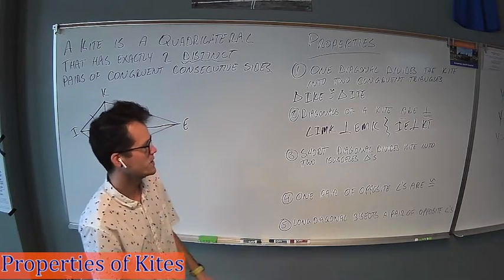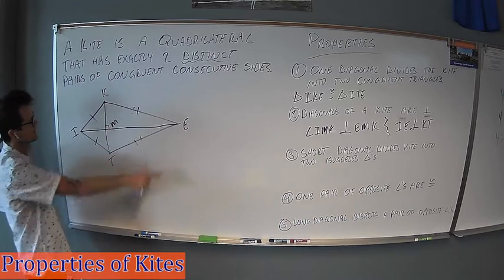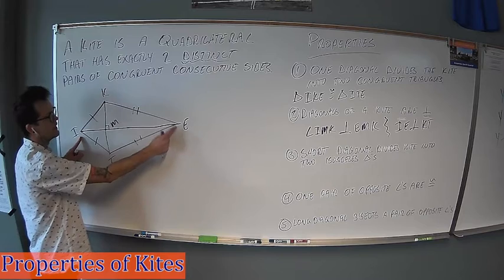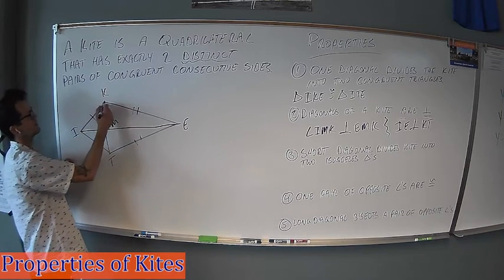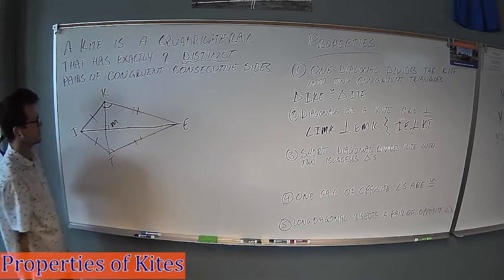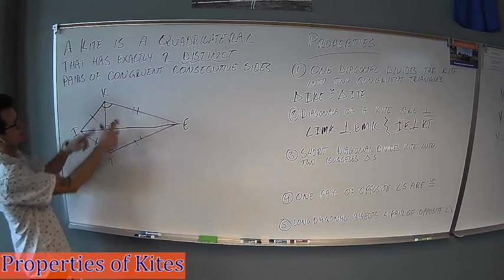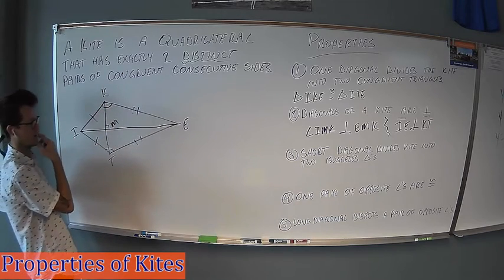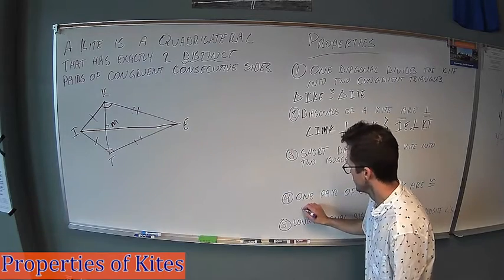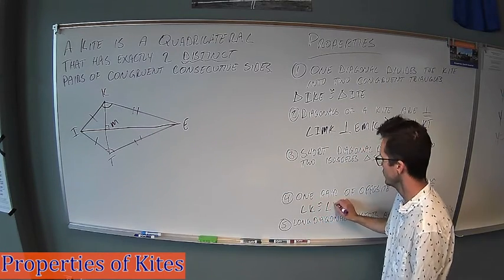Fourth out of five, one pair of opposite angles are congruent. So looking at this, kites, opposite angles, you have angle I and angle E. Those are not congruent, but these opposite angles, in this case, angle K and angle T are going to be congruent. And so it's where the short side and long side meet and then the short side and long side on the other side of the kite as well. These are always going to be congruent angles. So I'd say angle K is congruent to angle T.